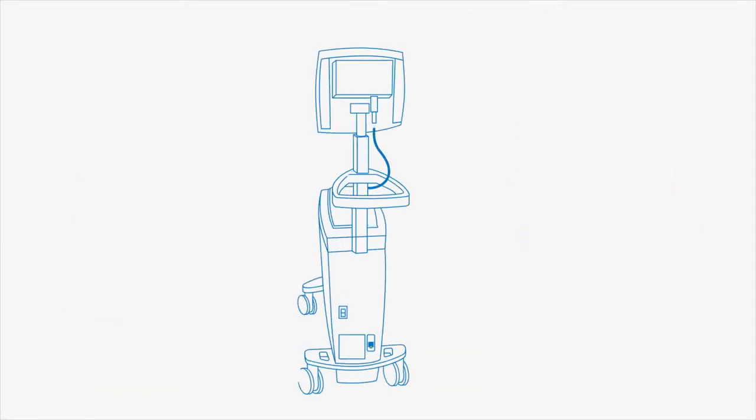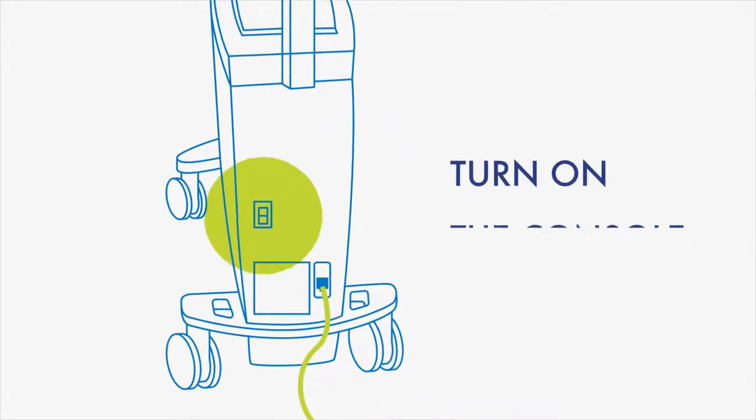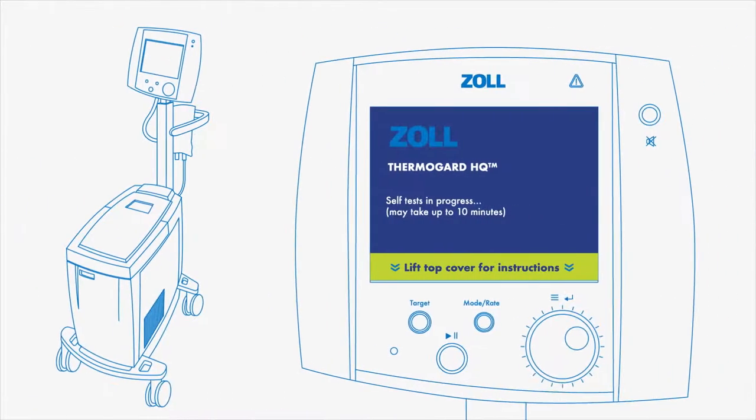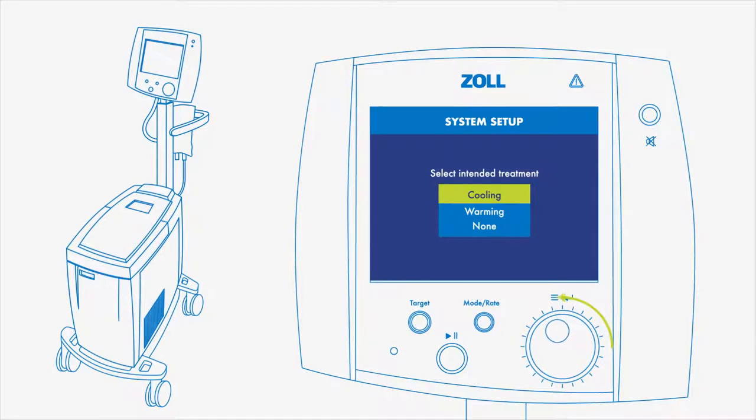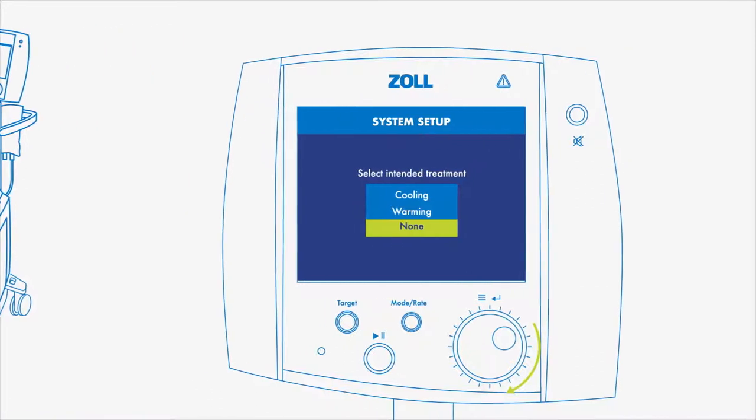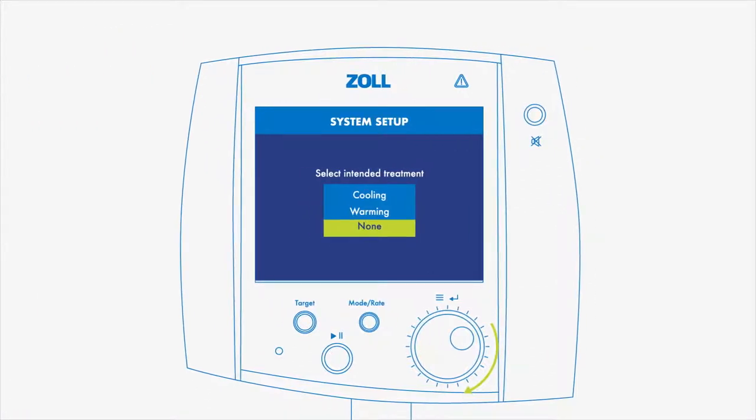Plug the ThermoGuard HQ into the wall socket and turn on the console. Rotate the dial to make a selection and push to confirm. Choose the treatment settings according to the desired application and in line with your hospital's own protocols.